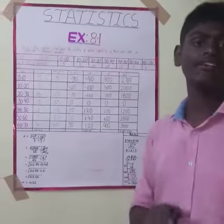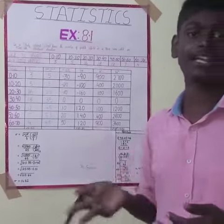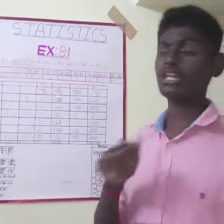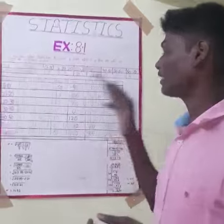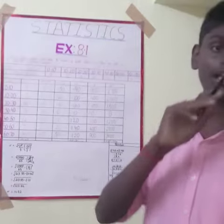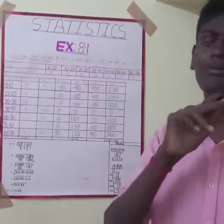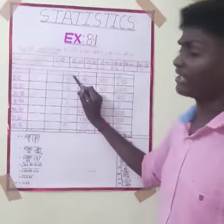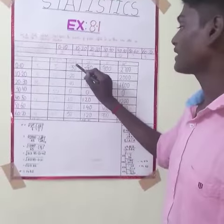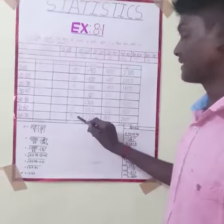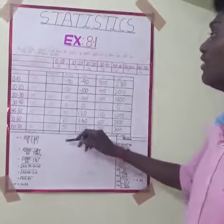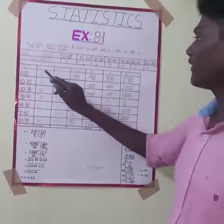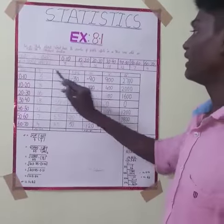D is X minus A. A is the assumed mean, equal to 35. So D is X minus 35. We take the D values, then we compute F·D.